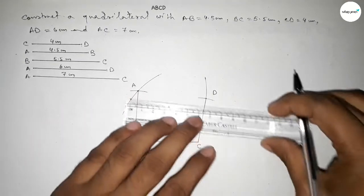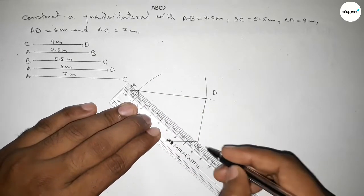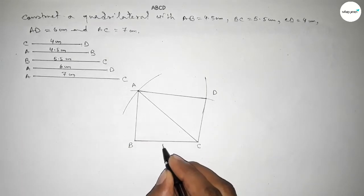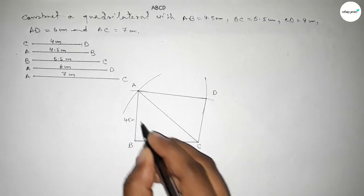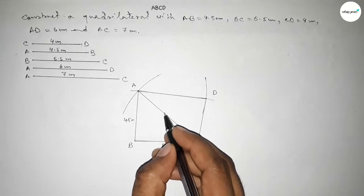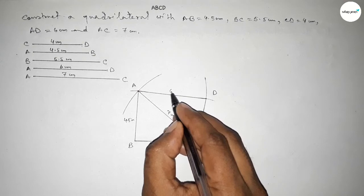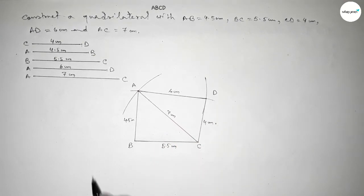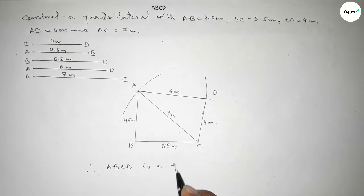Now joining A and B, then joining C and D, then joining A and D to get the quadrilateral ABCD, and now joining the diagonal AC. So this side is 5.5 centimeter, this side 4.5 centimeter, this side 7 centimeter, this side 6 centimeter, and this side 4 centimeter. Therefore ABCD is a quadrilateral.